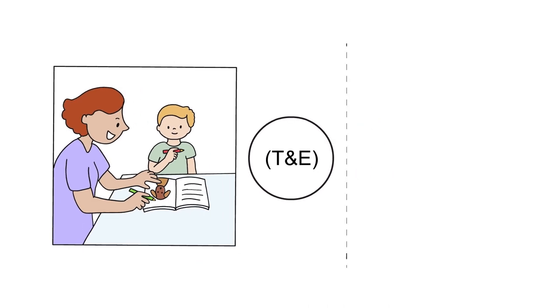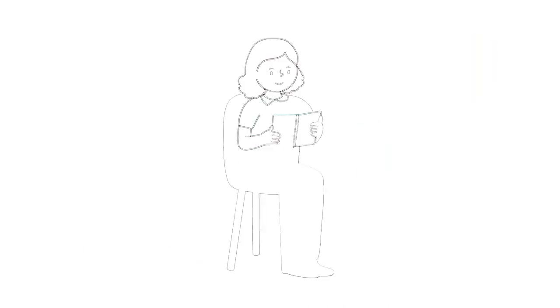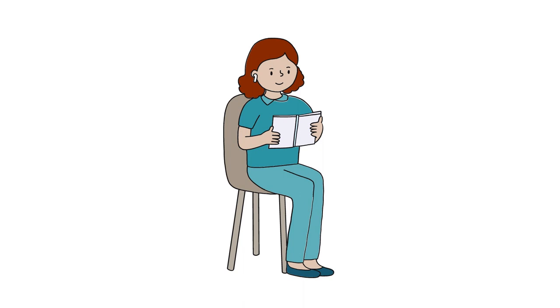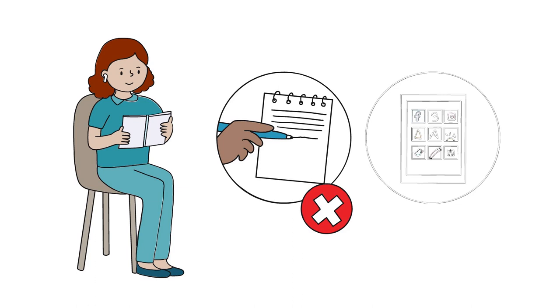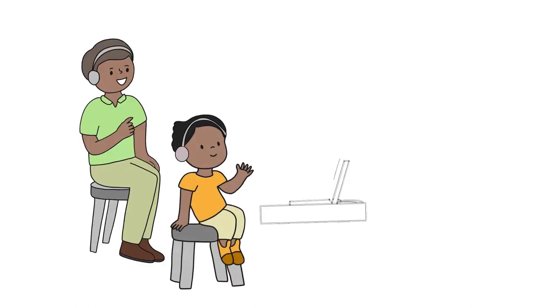An adult is required to be present at all times during the entire testing session. The adult should wear headphones and engage in a quiet activity such as reading a book and refrain from writing and using any technology such as a mobile phone. The adult should at all times remain in the view of the assessor.